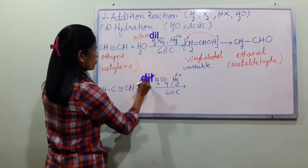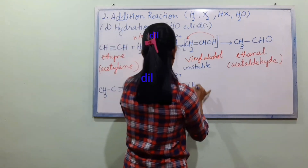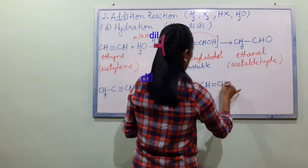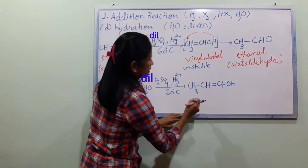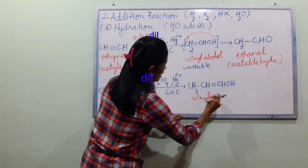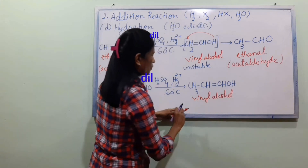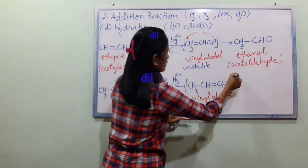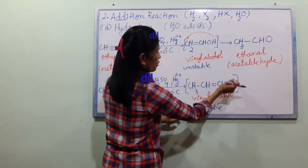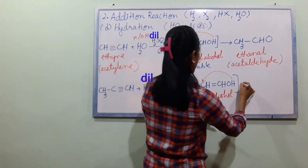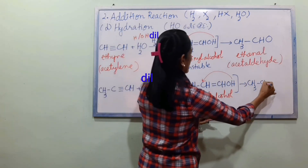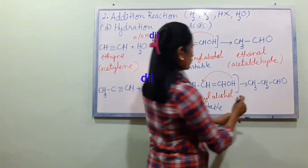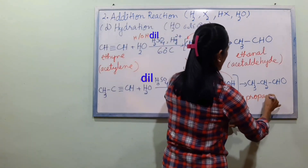We will use H. When we use H, we get H3C2CHO — that means the product is propanal, spelled P-R-O-P-A-N-A-L.